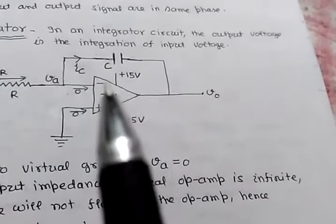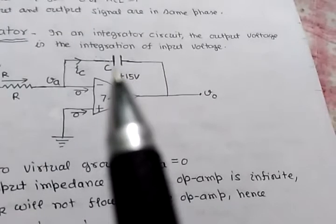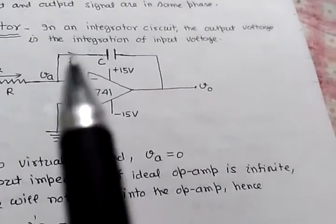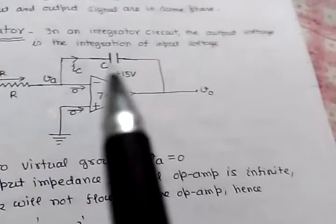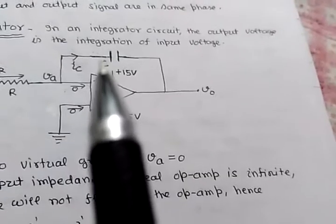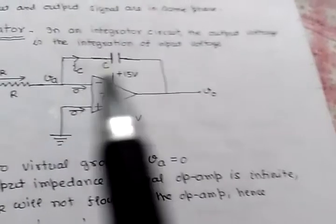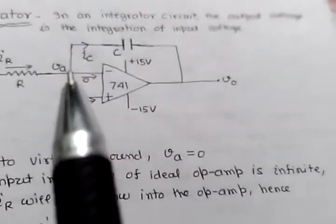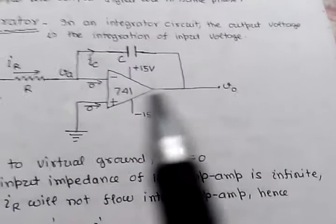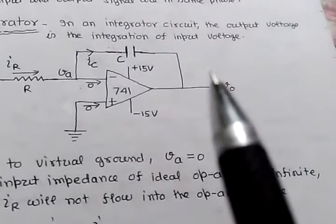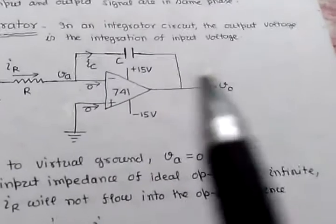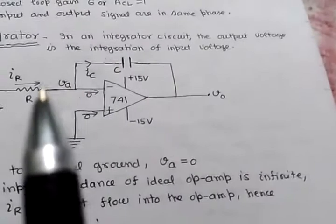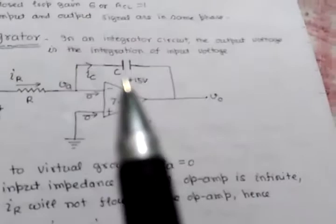IR equals the voltage across resistance R, which is Vi minus Va, divided by R. IC equals C into dVc/dt, where Vc is the voltage across the capacitor C. The voltage across capacitor C is Va minus Vo. We will now equate IR equals IC.